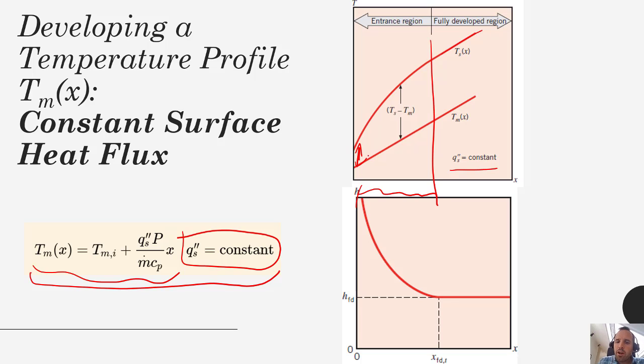Because you may have this higher h locally in the entrance region, that would translate to being able to achieve that same amount of flux with a smaller temperature difference. If we were talking about fully developed flow the entire way, let's say this pipe is really long and we neglect this entrance region, then our surface temperature is just constant.